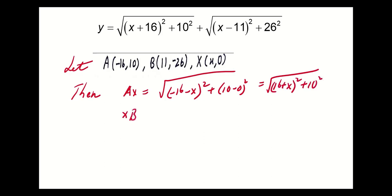Next, XB will equal √((x-11)² + (0-(-26))²). This is the second square root in the expression.